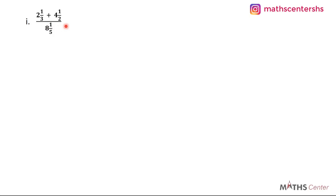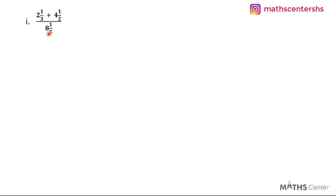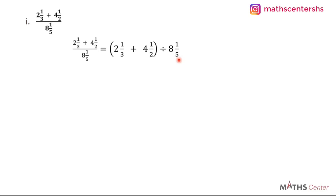So you put the numerator terms — 2 whole number 1 over 3 plus 4 whole number 1 over 2 — in a bracket, then divided by 8 whole number 1 over 5. Since we have mixed numbers, we first convert all of them to improper fractions. We convert 2 whole number 1 over 3 to get 7 over 3. Plus, we convert 4 whole number 1 over 2 to get 9 over 2. Divided by: we convert 8 whole number 1 over 5 to get 41 over 5.